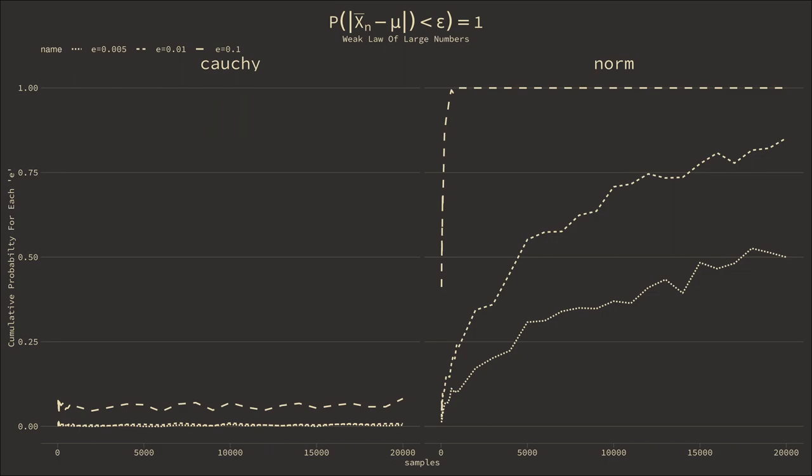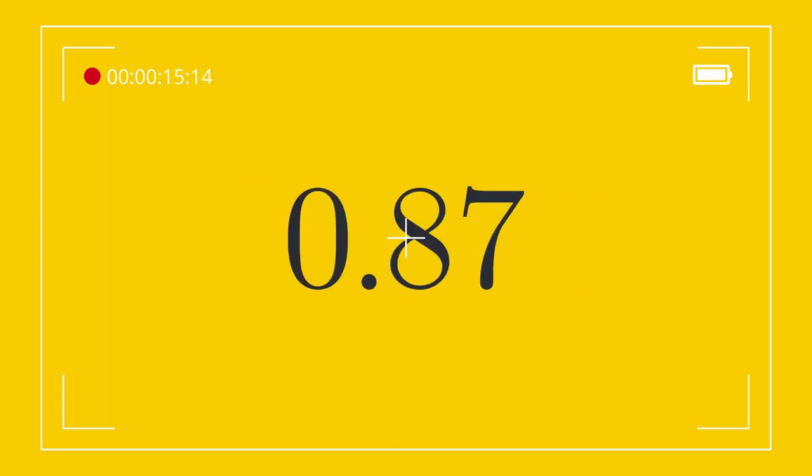The numbers I showed at the beginning of the video are draws from the Cauchy distribution. Without a convergence in probability, it is impossible to take an average. I mean, you can average the sample, but it says nothing about the population average.